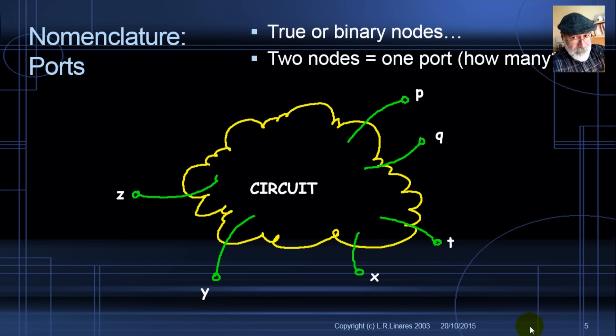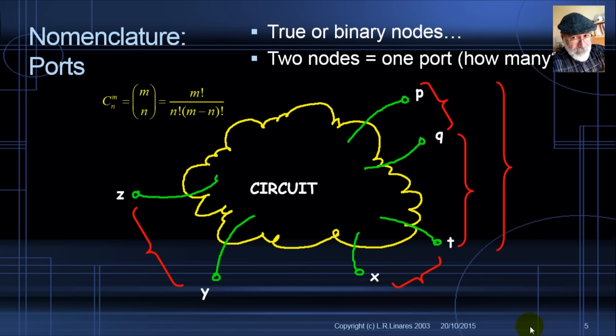Two nodes make one port. How many ports do you see in the figure? If you say three, you're thinking of PQ, XT, and ZY. But what about QT or PT? To count all possibilities, we need to find the number of combinations of six nodes taken two at a time, where order is not important. That gives us 15 possible ports given six nodes.